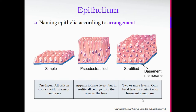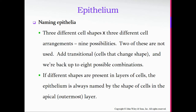To summarize the arrangement: a single layer of cells is simple, multiple layers is stratified, and a single layer that appears to be multiple layers but in actuality is just one is pseudostratified — pseudo means false. The three different cell shapes times three different cell arrangements would equal nine possible combinations, but in reality two of those are not found in the body.